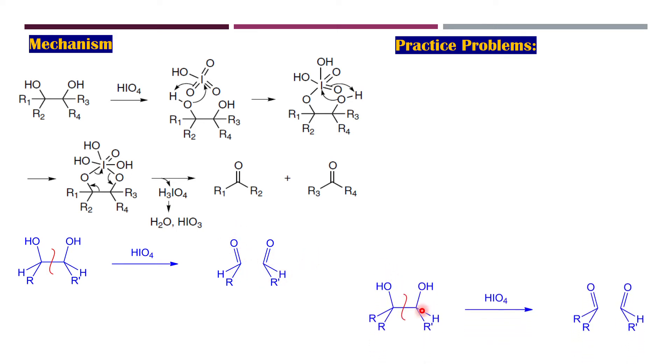We have been given a diol in which we can see there is alkyl, alkyl and alkyl and H. So one will be this side will be your ketone as we can see and this side over here will be your aldehyde as you can see.